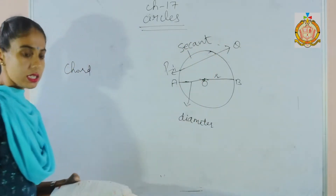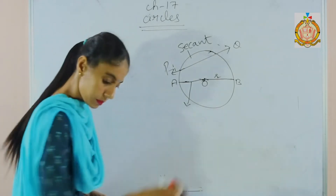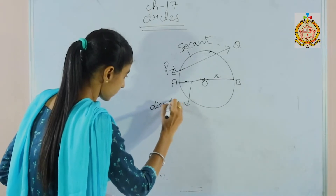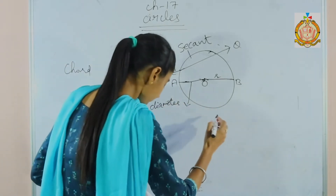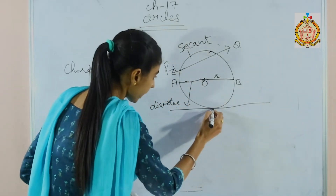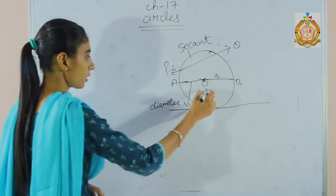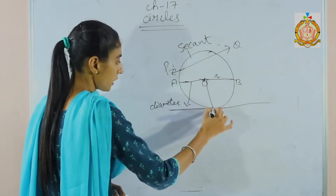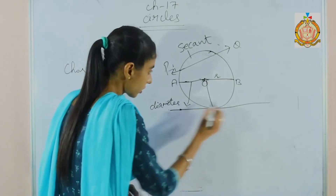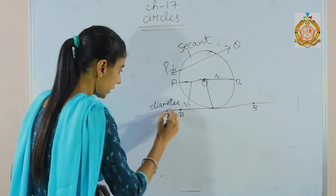Next is the tangent. A tangent is a line which touches the circle at one point only, and it is called a tangent. Their perpendicular distance is 90 degrees — this is called a tangent.